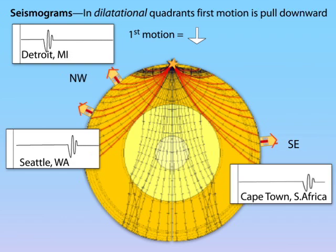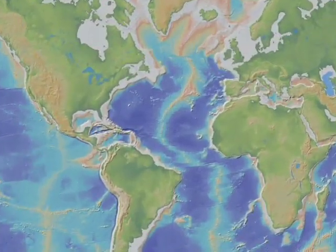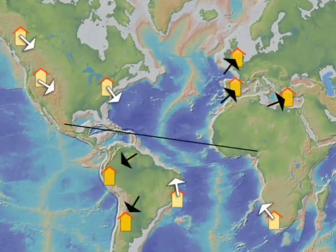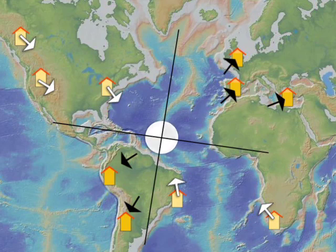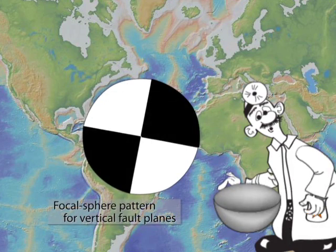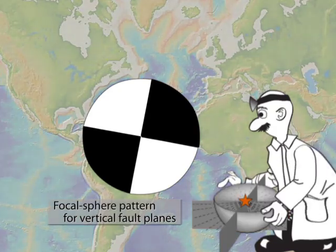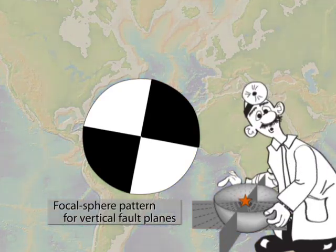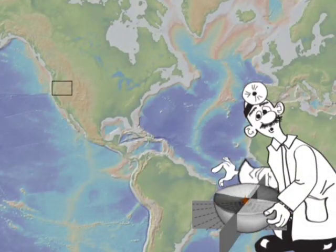By examining first arriving P waves at many stations over a range of azimuths and distances from the earthquake, we can determine the pattern of compressions and dilatations on the lower hemisphere of the focal sphere. As we have seen, a strike-slip earthquake produces a crossing pattern of approximately vertical nodal planes that separate two compressional and two dilatational quadrants.